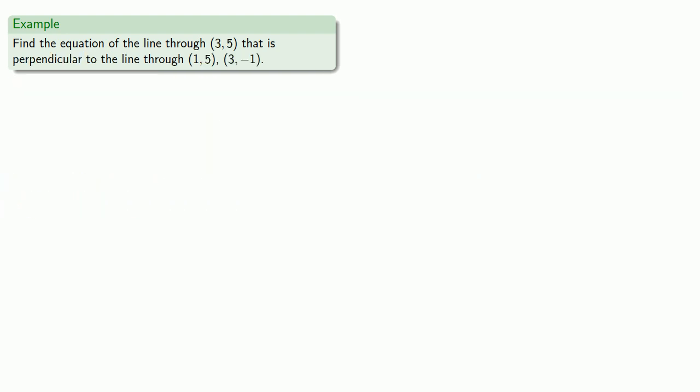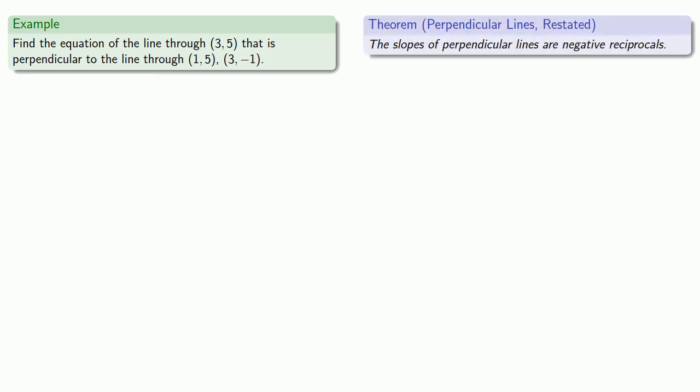So here we have a bunch of points. The problem is only one of them is actually on our line. The other two tell us something about the slope, but not about the slope of the line that we're trying to write the equation for. But we do know that we want the line to be perpendicular to another line. So let's bring up what we know about the slopes of perpendicular lines. And that means we should find the slope of the line through the points (1, 5) and (3, -1).